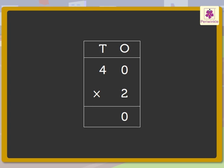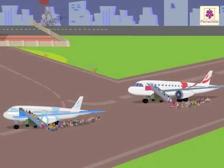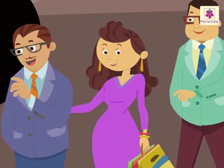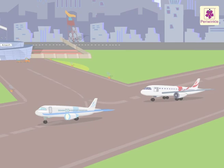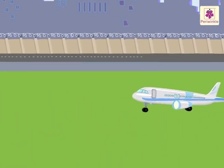0 into 2 is equal to 0. 4 into 2 is equal to 8. So the final product is 80. In all, there are 80 passengers in 2 aeroplanes — and I am one of them! Here it takes off!